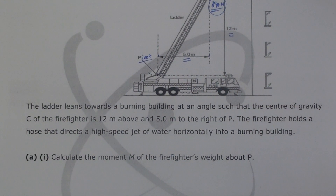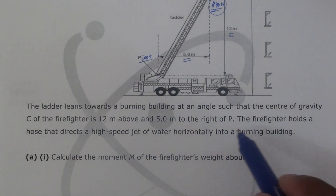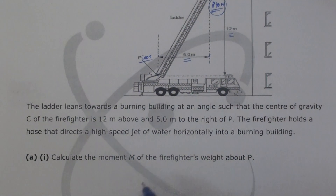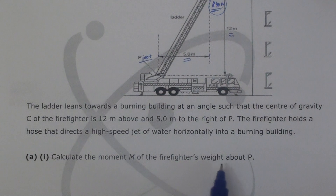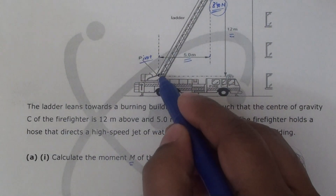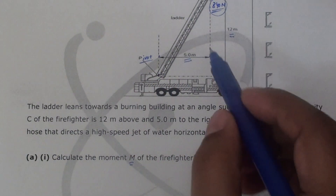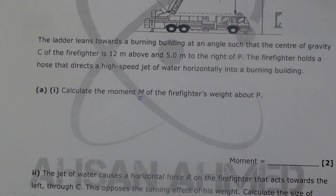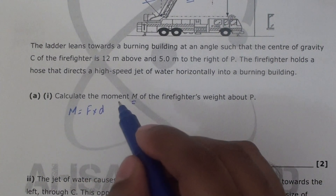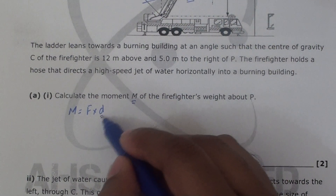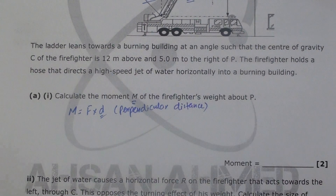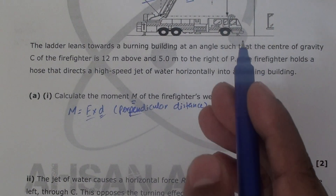The firefighter holds a hose that directs a high-speed jet of water horizontally into the burning building. Part one asks us to calculate the moment M of the firefighter's weight about P. We know the moment formula: M equals force multiplied by perpendicular distance.